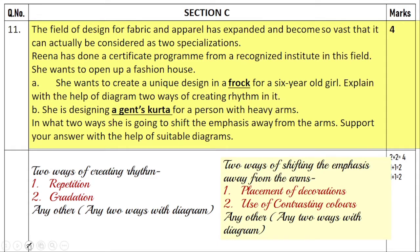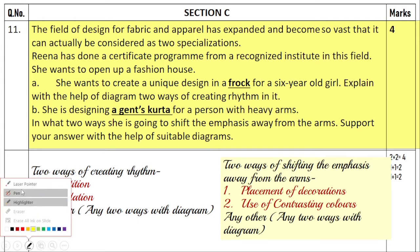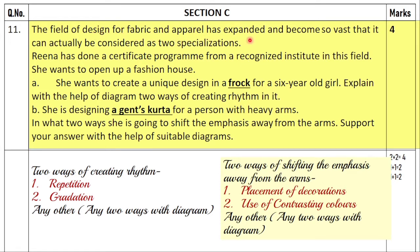The field of design and fabric and apparel has expanded and become so vast that it can actually be considered as two separate specializations — designing for fabric, which is more like textile designing, and apparel, which is fashion designing. These are two different specializations. Reena has done a certificate program from a recognized institute in this field. Now she wants to open up a fashion house, and she wants to create a unique design in a frock for a six-year-old girl.